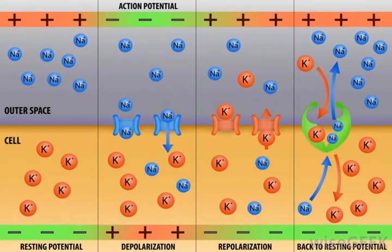If a membrane has already had one local stimulus applied and has not yet returned to its resting potential when another local stimulus is applied, these two stimuli can combine. This will create a greater potential that can travel farther down the membrane.